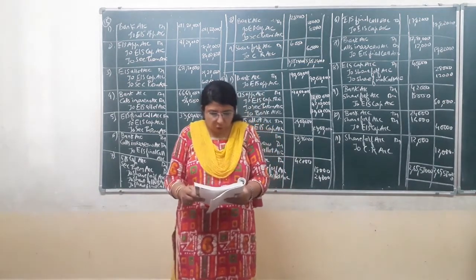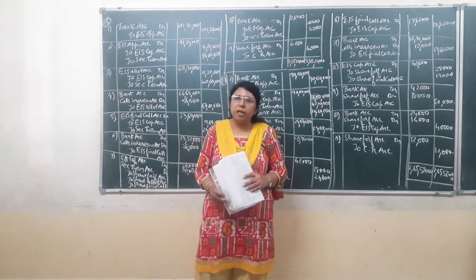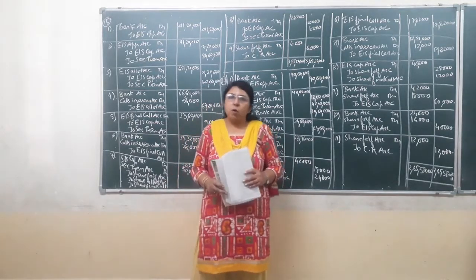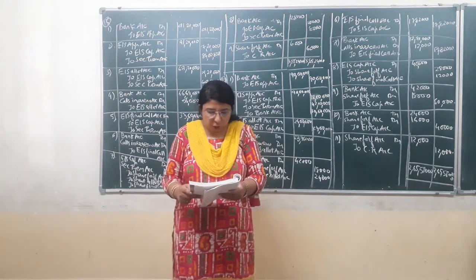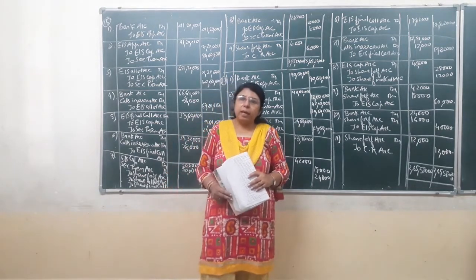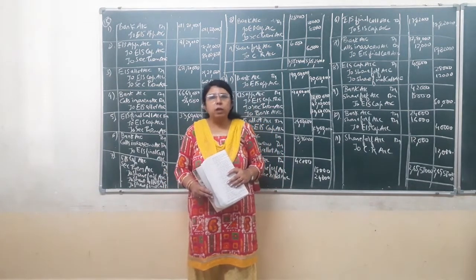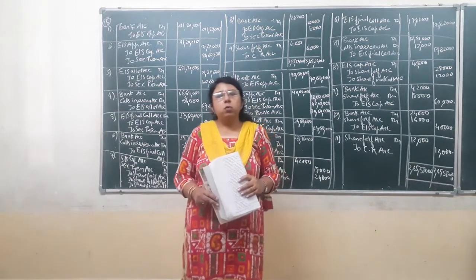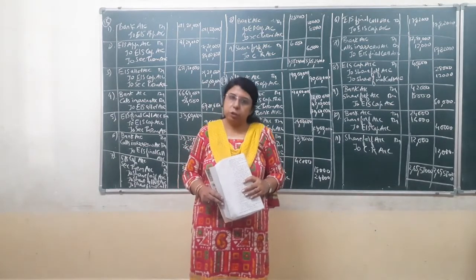Then Rs. 28 on allotment including premium of Rs. 25, so Rs. 3 face value at the time of allotment. And Rs. 14 on final call in which Rs. 10 is premium, so the amount of final call face value is Rs. 4 per share.